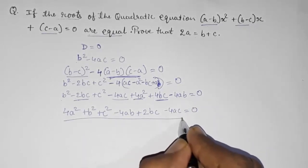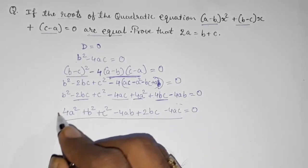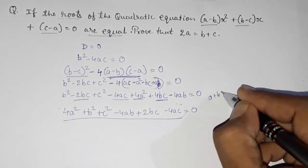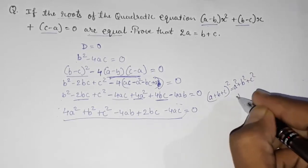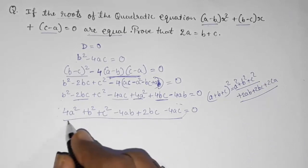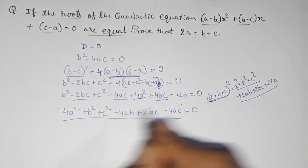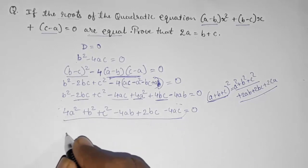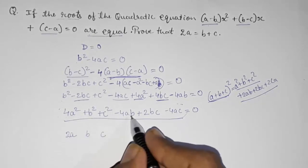Now you can see that this resembles the identity we learned in 9th standard: (a plus b plus c) whole square equals a squared plus b squared plus c squared plus 2ab plus 2bc plus 2ca. We can convert our expression into this form.